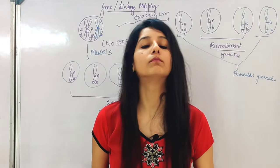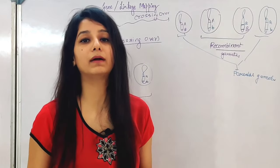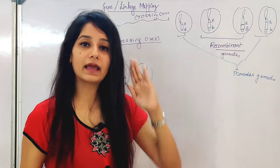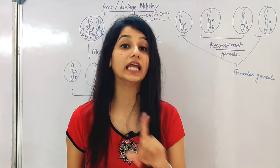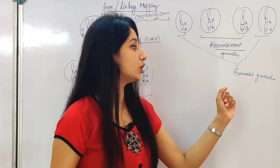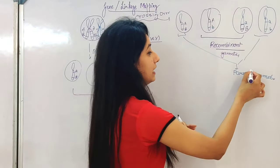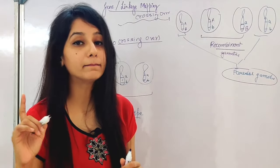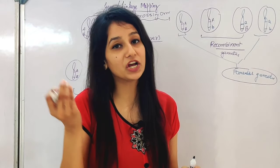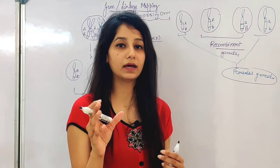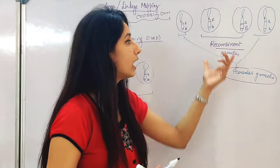If there is no crossing over, you will always make only parental gametes. Recombinant gametes only form when there is crossing over. If there is no crossing over, then recombinant gametes will not be formed. Parental gametes will always be more than recombinant gametes — generally more, never less.